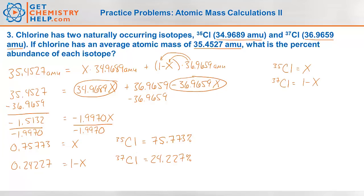Does this answer seem reasonable? Well, three-fourths of it has a mass of about 35 and a fourth of it has a mass of about 37. So it should be closer to 35 than 37, and the average was indeed closer to 35 than 37. So yes, this seems like a reasonable answer. Well, hope you enjoyed these practice problems on atomic mass calculations. Be sure and leave me a comment down below to let me know what you think, and hit the subscribe button so you can be notified as soon as new video lessons are posted. We'll see you back here next time at GetChemistryHelp.com.